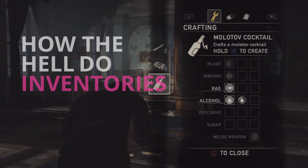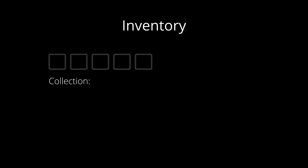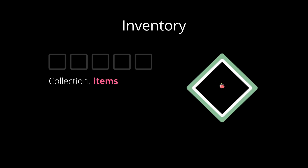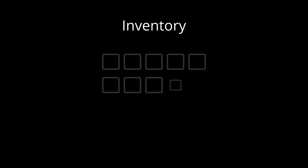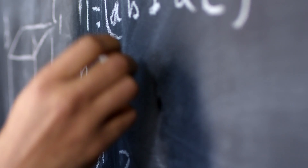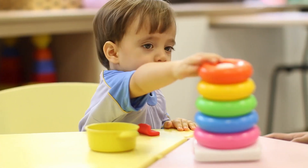But how the hell do inventories work in video games anyway? There are several ways to create an inventory. Personally, I chose to use an array. An array is a collection where you can store data of a specific type — in my case items — and each one of these items is an object that contains many useful properties such as the name, the description, and the thumbnail. Each position of the array has a specific index that works as a unique identifier to access the item stored. So for example, if the array has 10 slots, we can have a unique item in each one of those 10 slots.